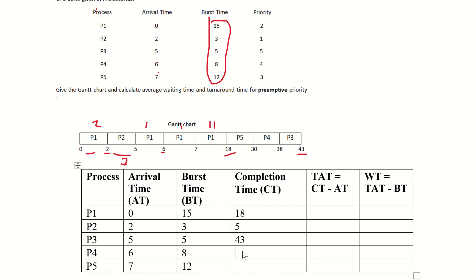So 43 is the completion time of P3. Next, P4's completion time is 38. Then P5's completion time is 30. So we will get the completion time for all processes.